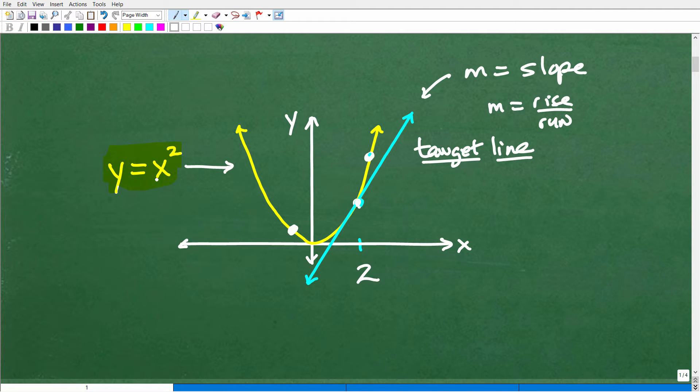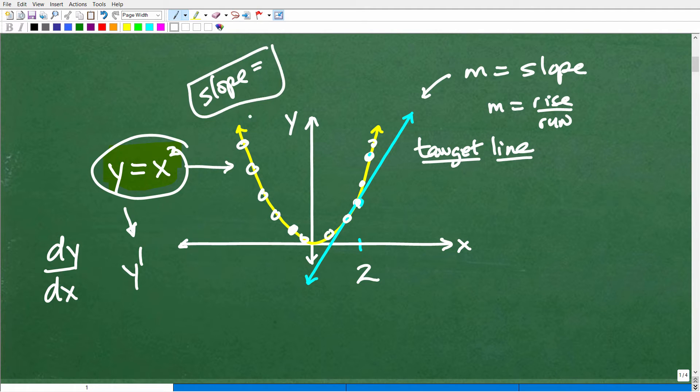Now, if I find something called the first derivative, in calculus we write that as dy/dx or y prime. So I could take this right here. We're gonna find something called y prime. It's called the first derivative. And the first derivative is awesome because it will tell us the slope of any point I want along this curve, or any curve for that matter.